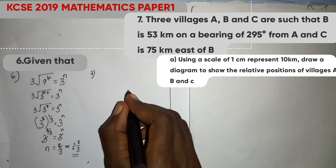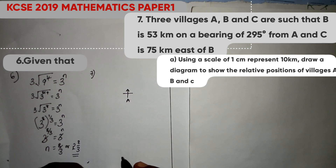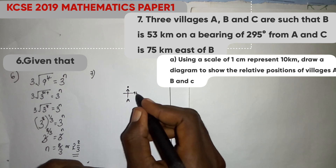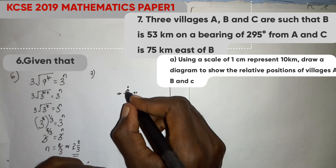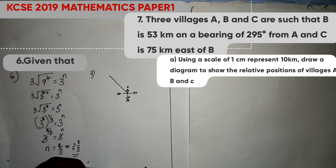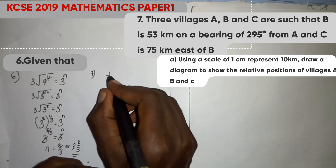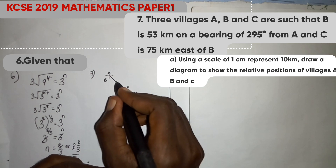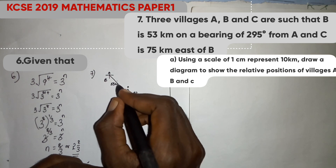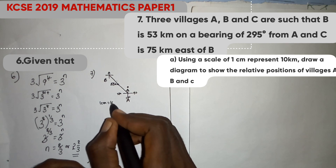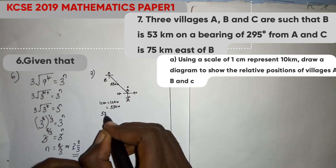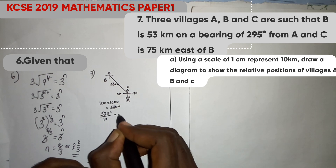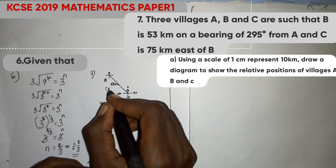Let us sketch here. If we have village A here, with north at 0, east at 90, south at 180, and west at 270, then 295 degrees passes somewhere past 270. So village B is at bearing 295 degrees, at a distance of 53 km. Using the scale where 1 cm equals 10 km, 53 km converts to 5.3 cm.